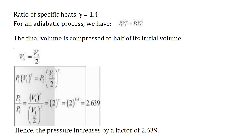For an adiabatic process we have P1 V1 to the power of gamma equals P2 V2 to the power gamma. The final volume V2 is actually half of V1, so V1 by 2 — the final volume is compressed to half of its initial volume. Substituting V1 by 2 in place of V2, when we take the ratio of P2 by P1, it gives 2 to the power gamma, since V1 cancels. Gamma is 1.4, so 2 to the power 1.4 gives 2.639. The pressure increases by a factor of 2.639.